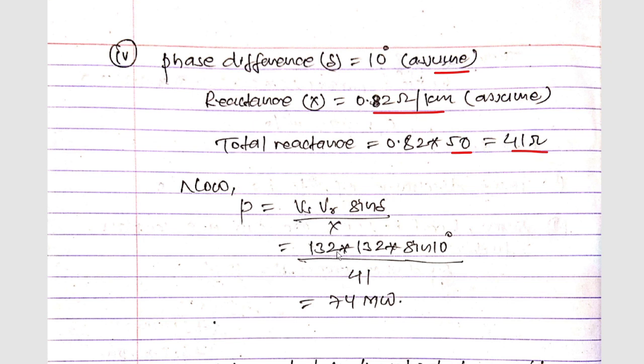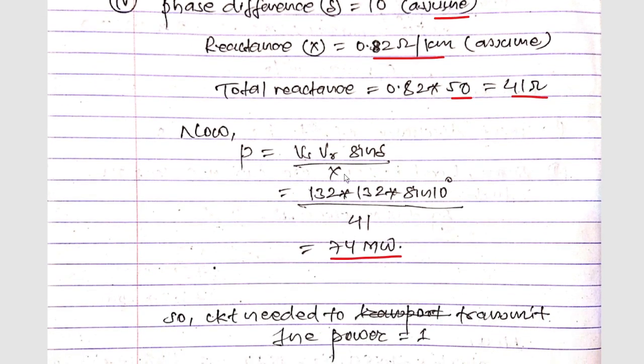Taking sending and receiving voltages as 132 kV: 132 × 132 × sin(10°) / 41. Since this is in kilovolts, the output will be in megawatts. We get P = 74 megawatts.